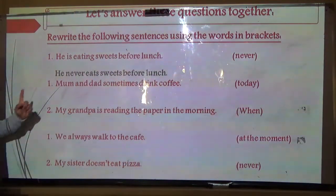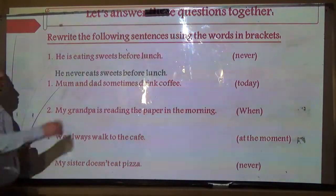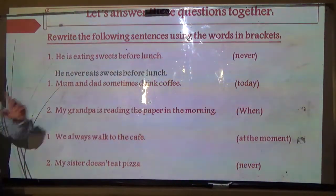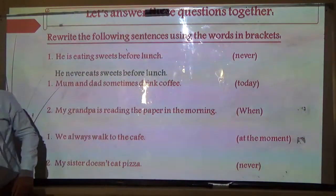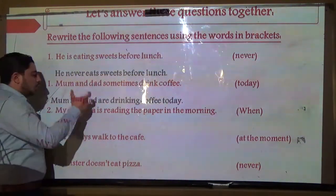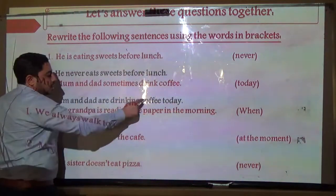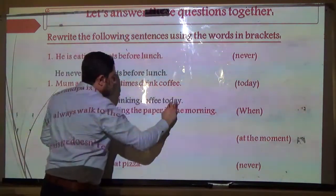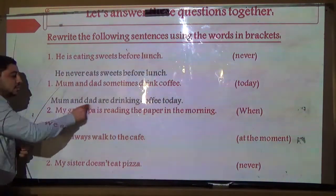Number two: 'Mom and dad sometimes drink coffee' — change to 'today.' We remove 'sometimes' and add 'today' at the end. Since mom and dad are plural, we use 'are' and add -ING to the verb. Answer: 'Mom and dad are drinking coffee today.'